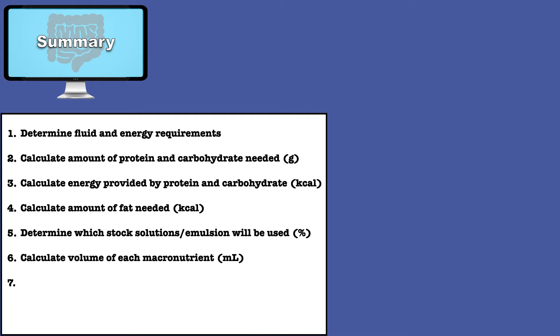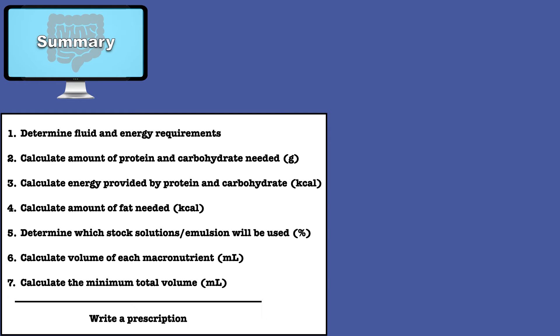And take those concentrations to calculate the volume of each macronutrient. Finally, you take the volume of each macronutrient to calculate the minimum total volume. Only when you have completed all seven steps will you be ready to write a prescription.